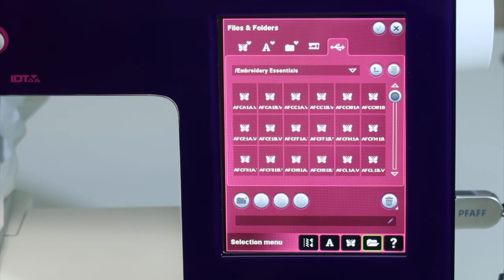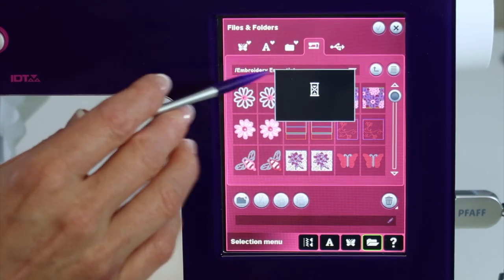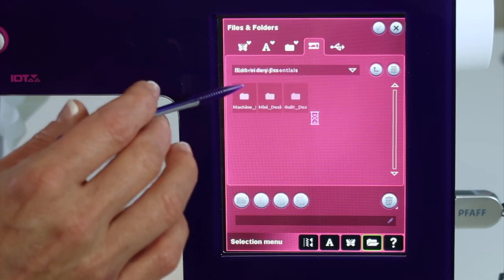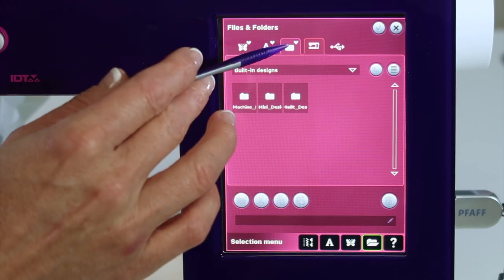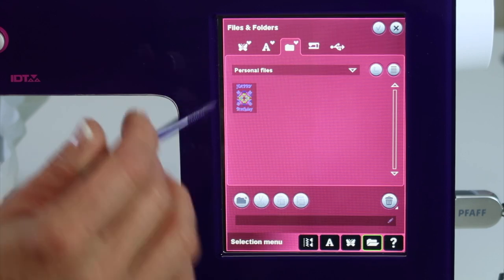Then you can actually go in and save designs to the machine. If you touch the little Sewing Machine icon, those are the built-in designs. The folder with the heart - think your favorites - that's your personal files.